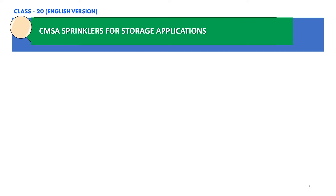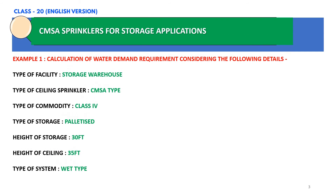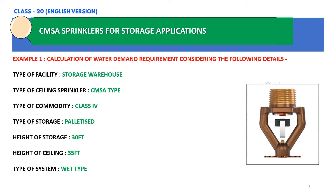In this slide, we are going to consider a storage warehouse example and try to find out the water demand requirement considering the details given. The type of facility is storage warehouse, type of ceiling sprinkler is CMSA type, type of commodity is class 4, type of storage is palletized storage, height of storage is 30 feet, height of ceiling is 35 feet, and type of system is wet type system.